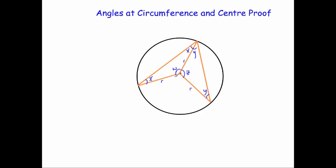What I know is that for the left triangle, since angles in a triangle add up to 180, W equals 180 minus 2X. And for the right triangle, since the angles add up to 180 and we take away the two Y's, Z equals 180 minus 2Y. So that's the size of W and the size of Z.